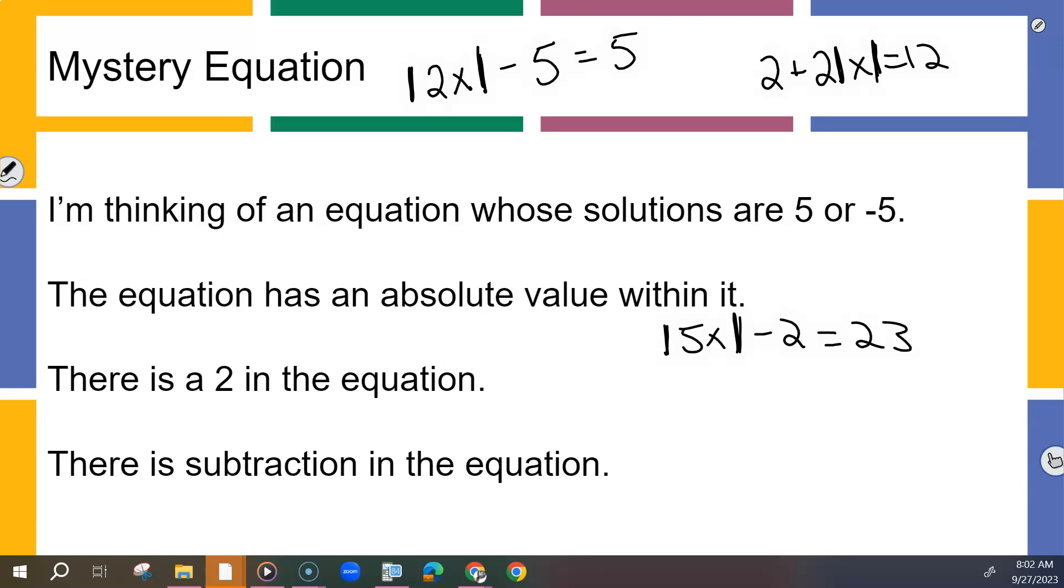Alright, so let's test these three. Make sure they work. I saw that they work, but I want you to see that they also work. Shouldn't all of them say equal five? So the solutions have to equal five. It doesn't have to equal five. Alright, so the solutions have to be five or negative five. We'll figure that out once we solve all three. They have to have an absolute value. They all do. There has to be a two in it. They all do. There has to be subtraction in it. Oh, I missed that one.